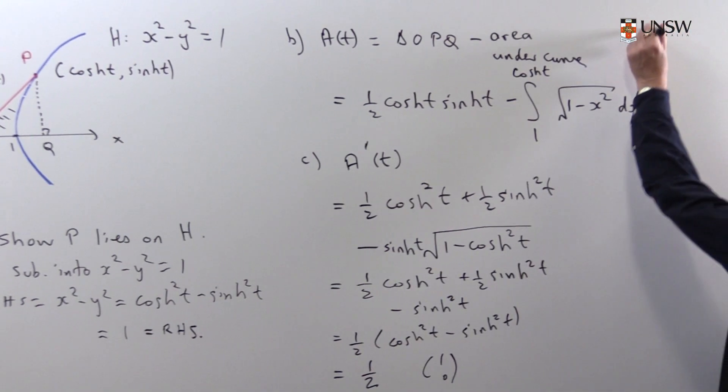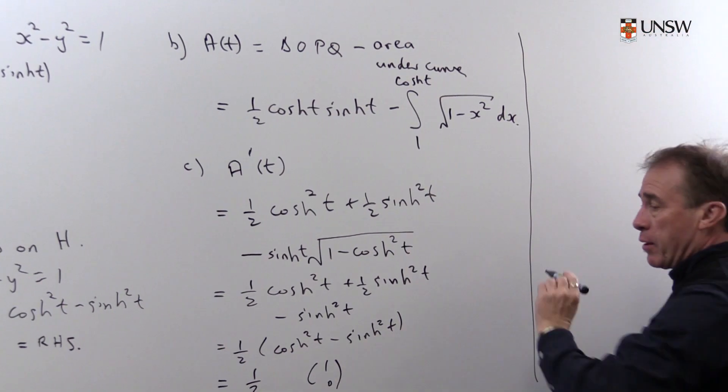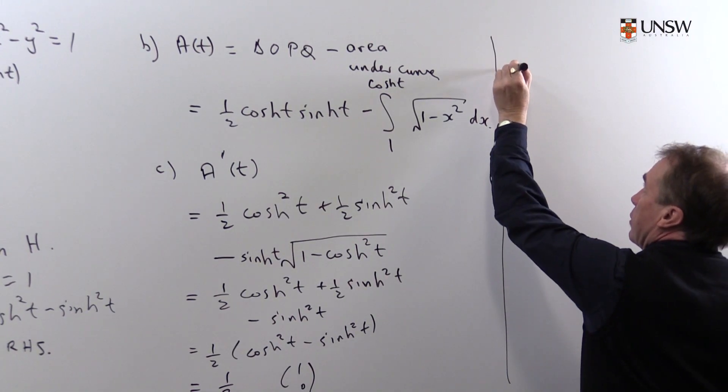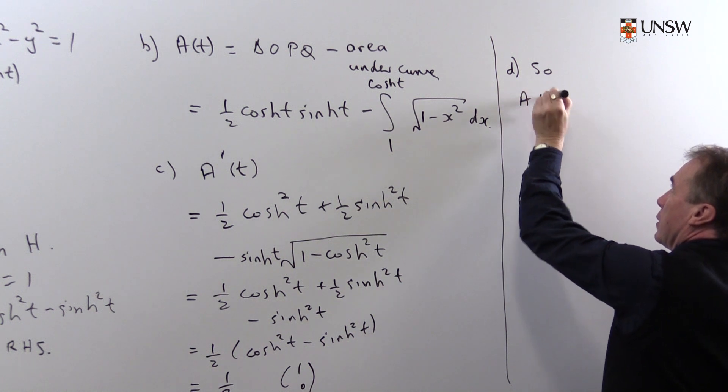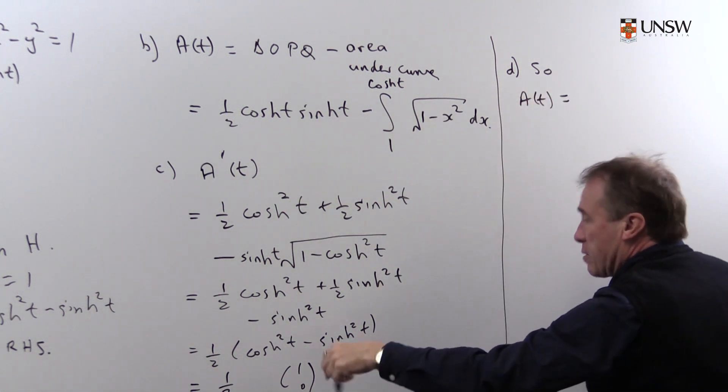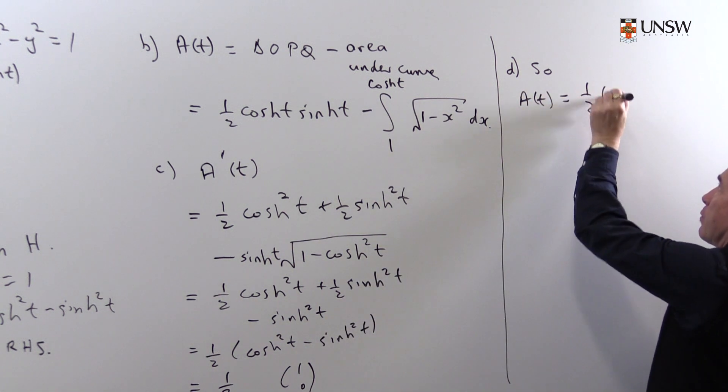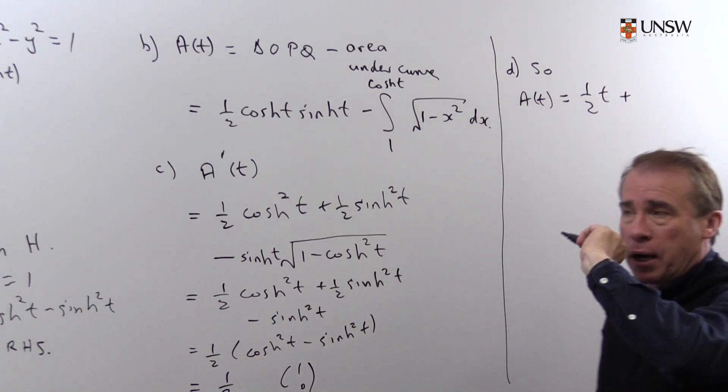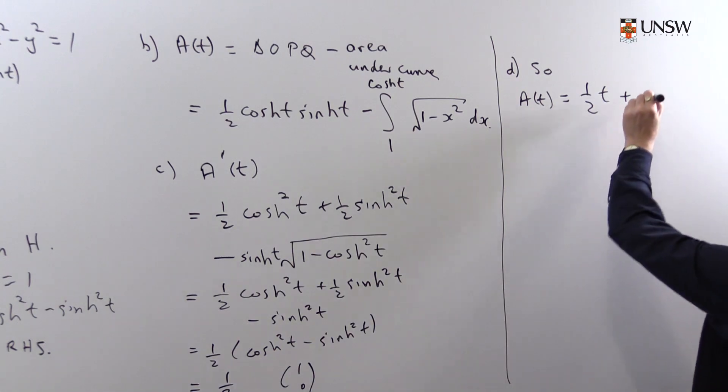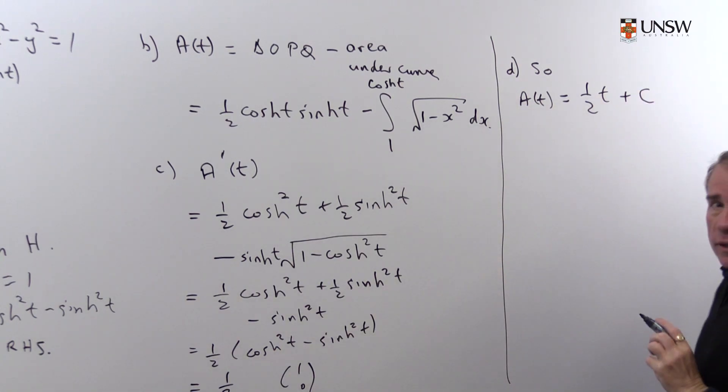So for the final part of the problem then, I'm going to, for part B, I'm just going to say, well now, so A of t, I can now just integrate this, I get one half t, but of course, when you integrate, don't forget you pick up a constant, so I'm going to pick up a plus c here, which we have to worry a little bit about.